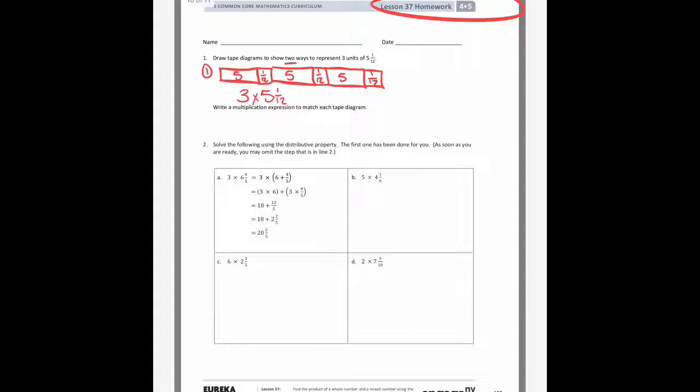Another way that you could write it is you could technically put all the 5's together and all the 1/12ths together to make it easier to add. So I'm going to put 5, 5, 5, and then 1/12, 1/12, 1/12. Technically, we still have three groups of 5 and 1/12, but we would write this as 3 times 5 plus 3 times 1/12, and we still get the same answer. We're just writing it a different way.